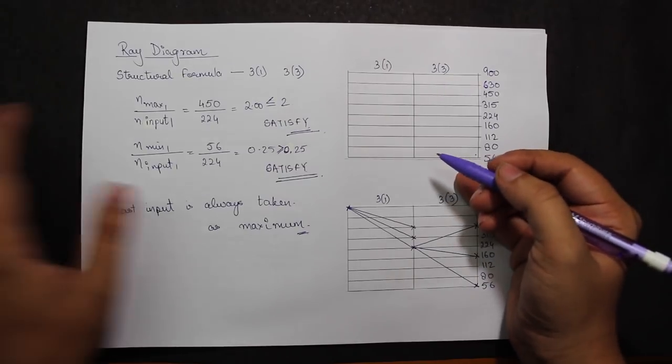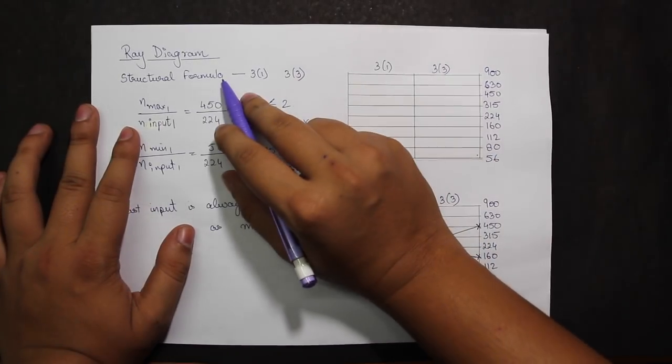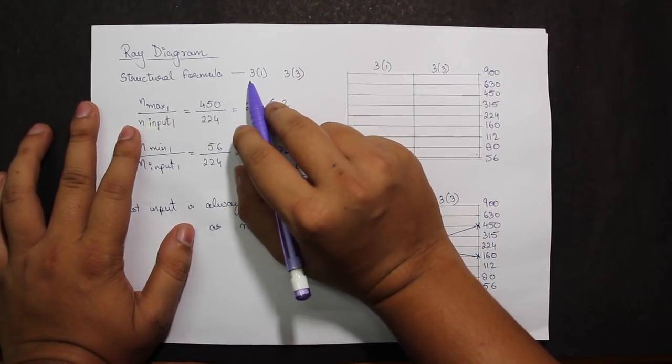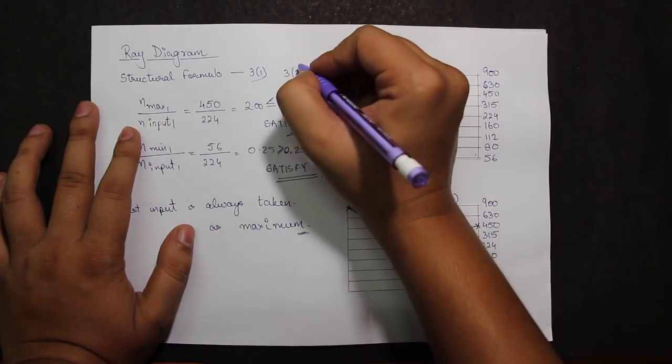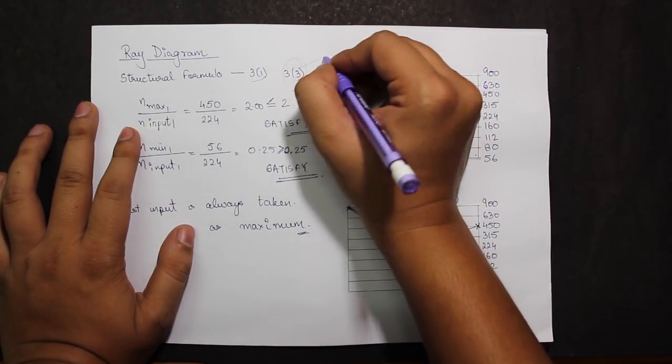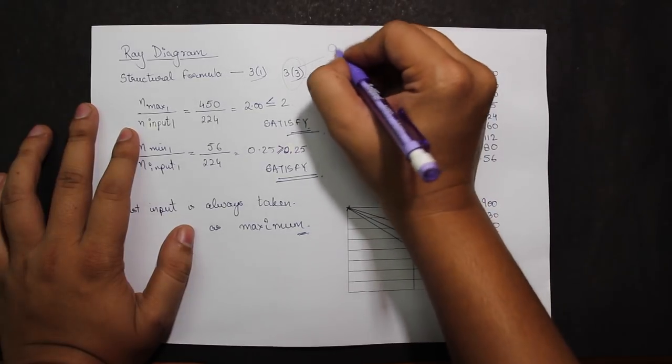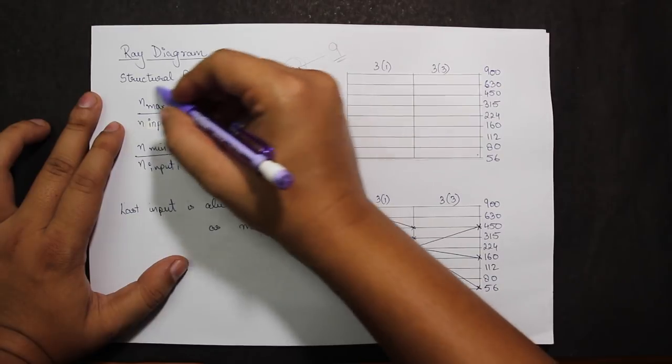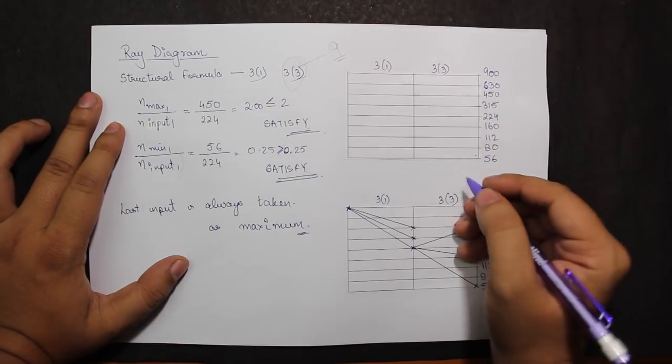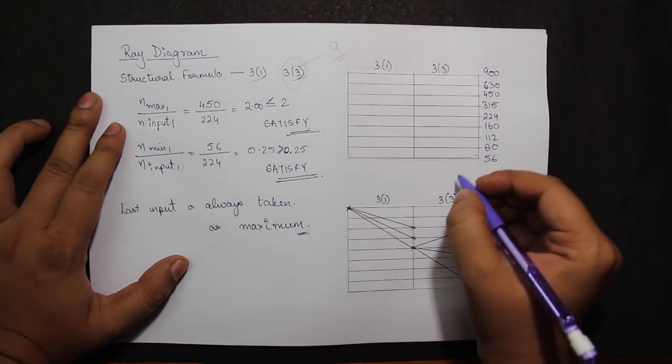Let's come to the ray diagram now. The ray diagram is drawn such that the structural formula is 3(1)3. Three into 3 equals 9, that is 9 gearbox. Now we know we have to satisfy two equations for the maximum, minimum, and input criteria.